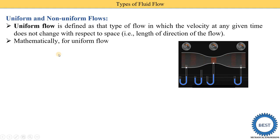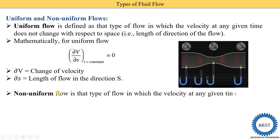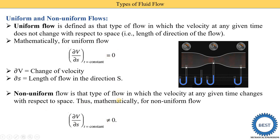Mathematically, uniform flow is expressed as the partial derivative of velocity with respect to space (s) at constant time equals zero, where s indicates the length of flow in the direction of flow. For non-uniform flow, which is that type in which velocity at a given time changes with respect to space, the partial derivative of velocity with respect to space does not equal zero.